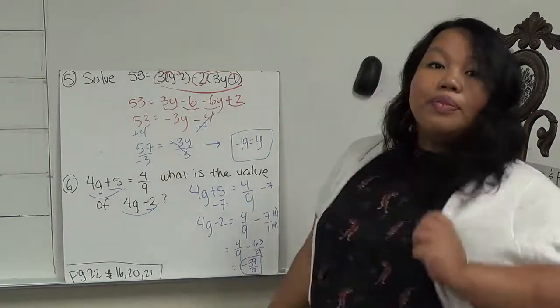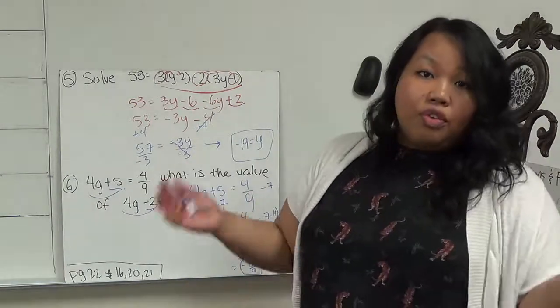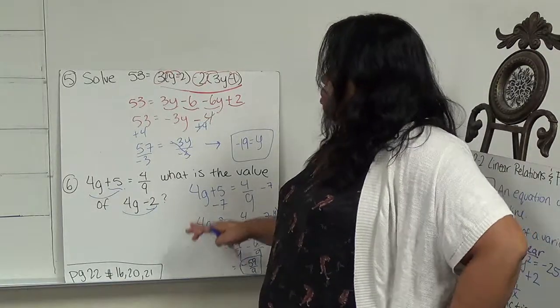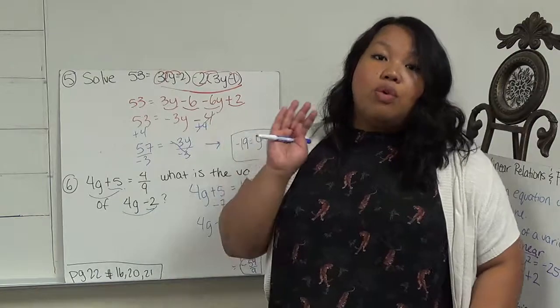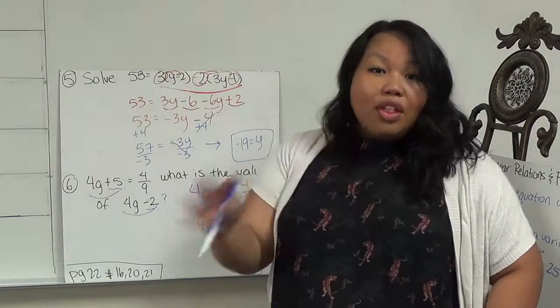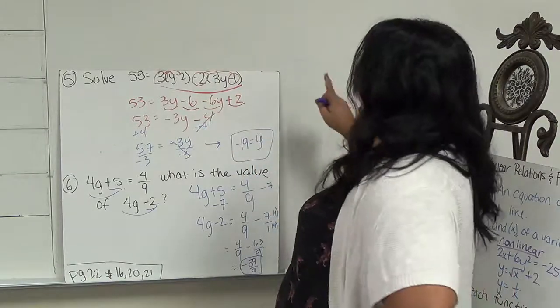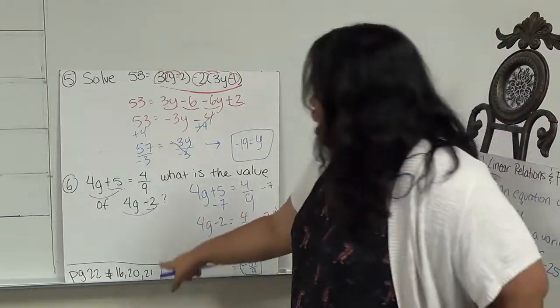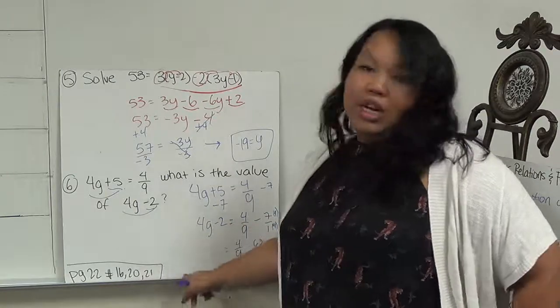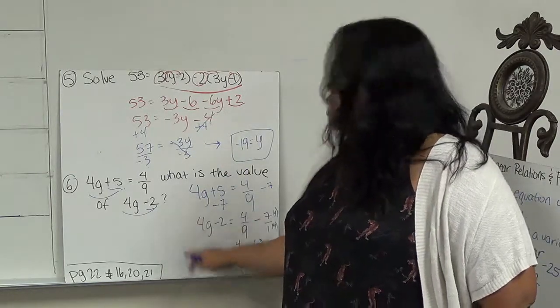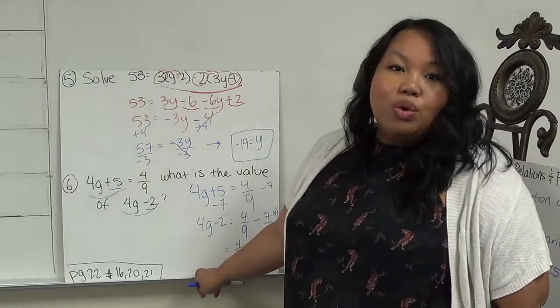So this is just teaching us the term. You're not always solving for a variable. You could be manipulating it to look for a certain value. But as long as you stick to the rule that what I do to one side, I have to do to the other, you'll be just fine. So this is your last board. Go ahead and pause and write this down. And try page 22, number 16, 20, and 21 before class. Page 22, number 16, 20, and 21. And I will see you in class.